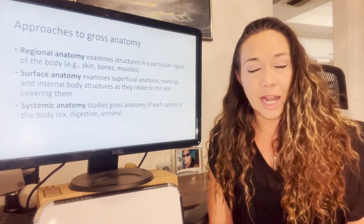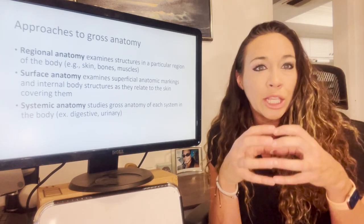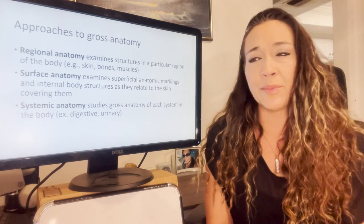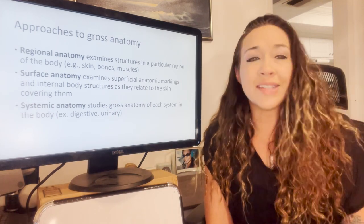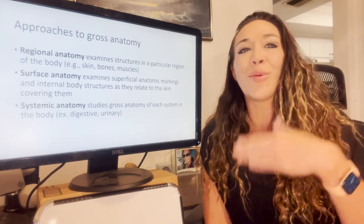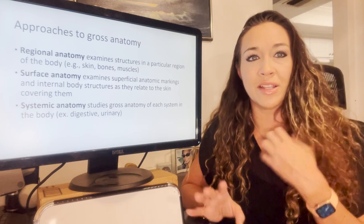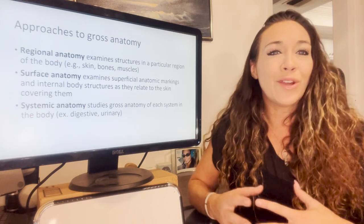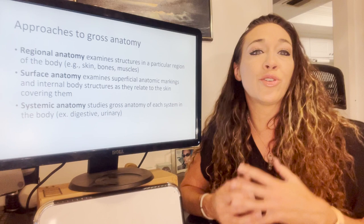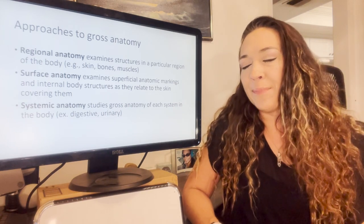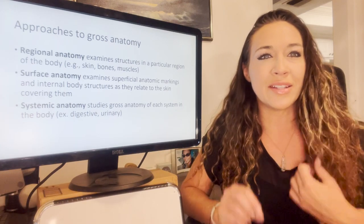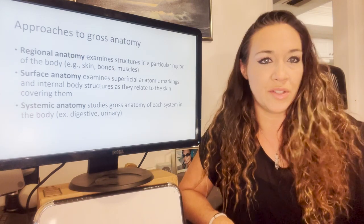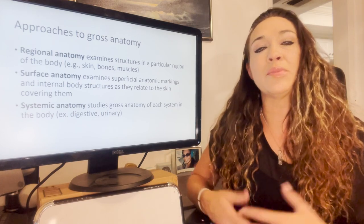There is also regional anatomy — focusing on just one particular region, like the skin, bones, or muscles. That's basically how we're going to set up the semester: starting with cells, then moving on to bones, muscles, and organ systems. We'll be looking at each region individually, including surface anatomy — everything exposed to the outside environment. Then we'll move into systematic anatomy, which focuses on organ systems: your digestive system, urinary system, reproductive system, and so on.